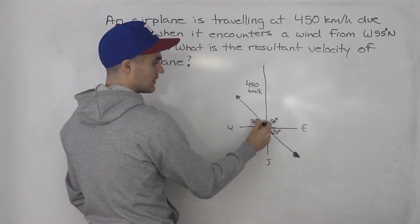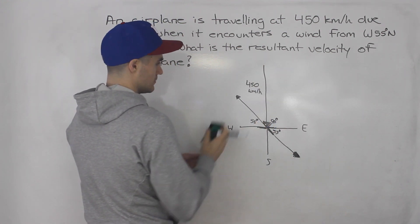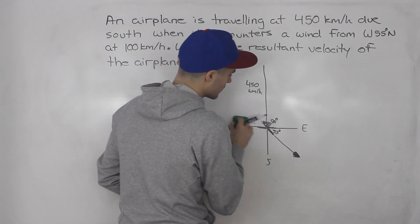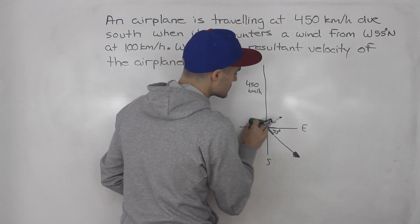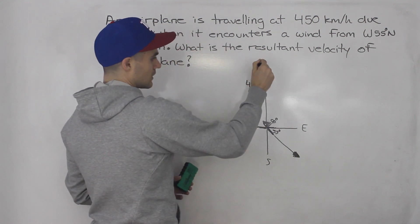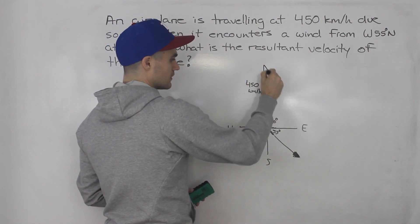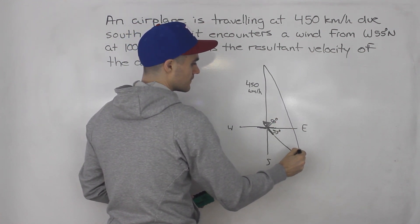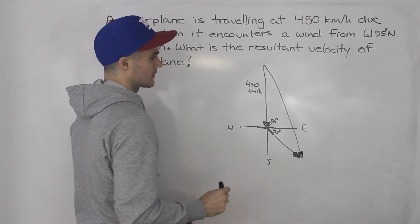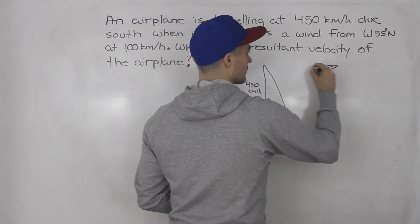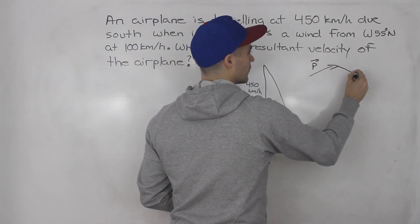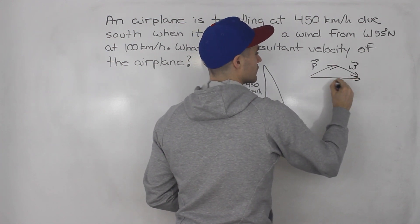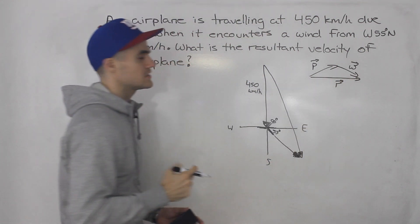And now notice that we have the plane vector, we got the wind vector. Let me erase this other one so there's just less going on here not to confuse you. So got the plane, got the wind, and so the resultant is going to look like that going that way, right? Because you have a plane vector, you got a wind vector, and then you have a resultant vector.